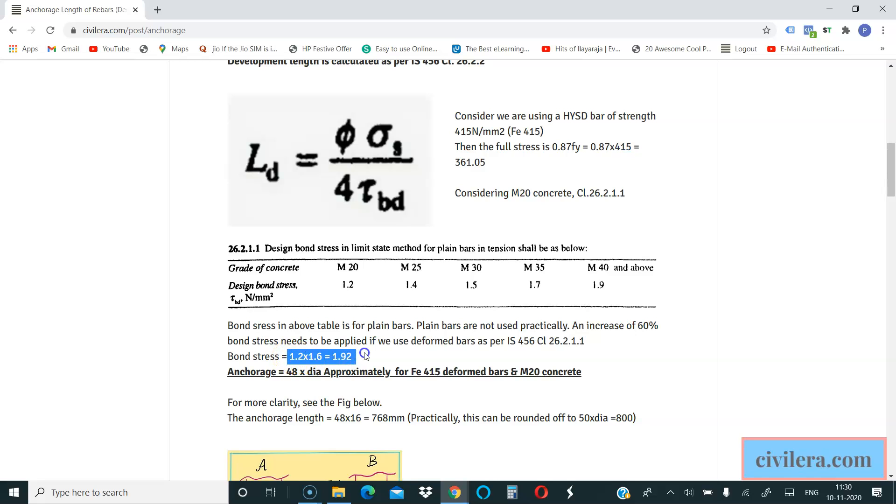I have increased the bond stress and then you get it as 50 times diameter if it is M20 concrete and if your grade of steel is 415. Now if your grade of concrete is more, if it is M25, your bond stress is more and your length requirement may be lesser. But since your sigma s is numerator, you can appreciate that if the steel grade increases, your requirement for development length also increases. So it is not always true to say 50 times diameter, so you can calculate as per this.